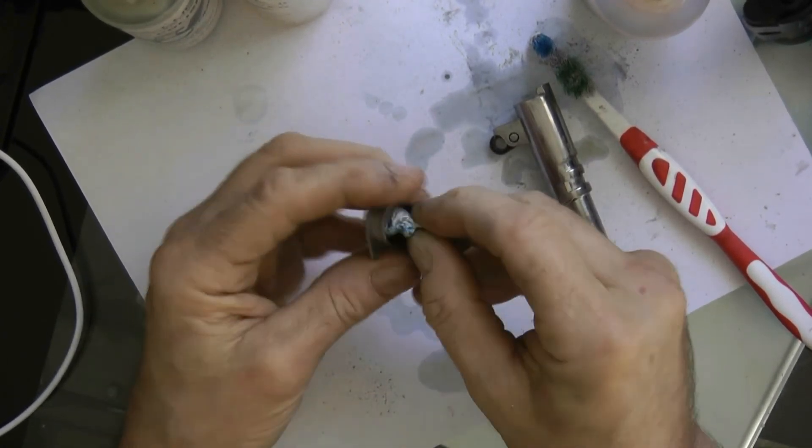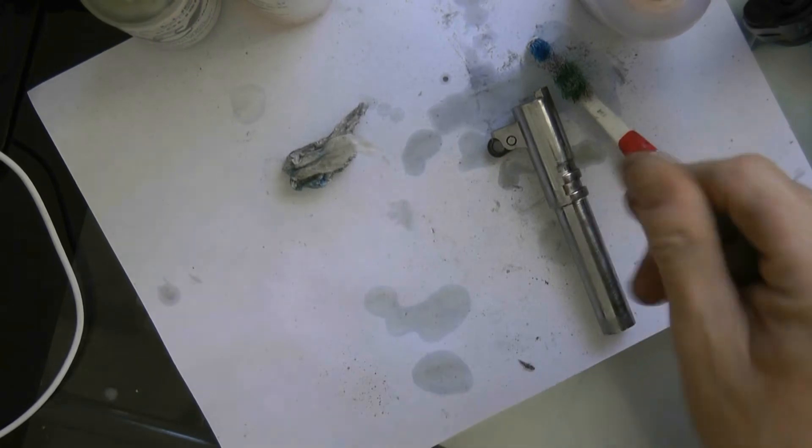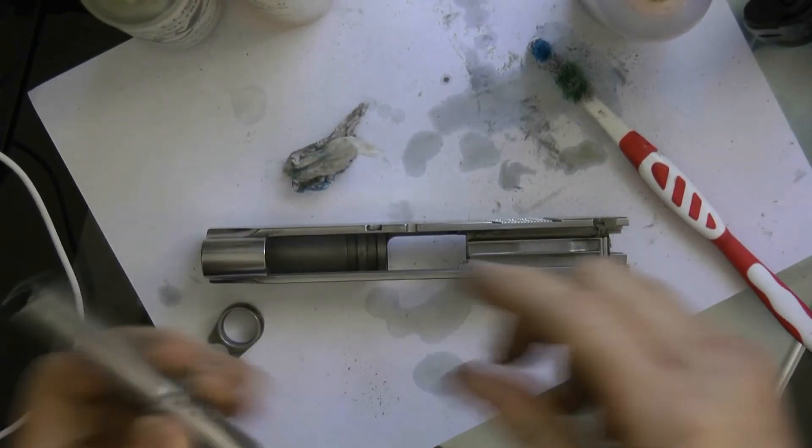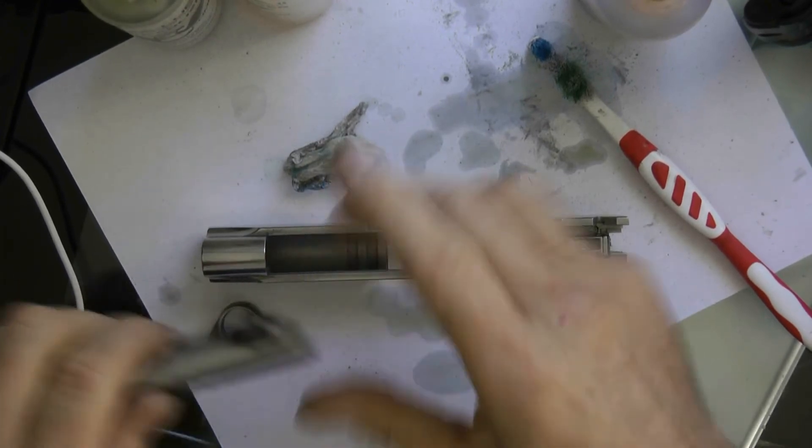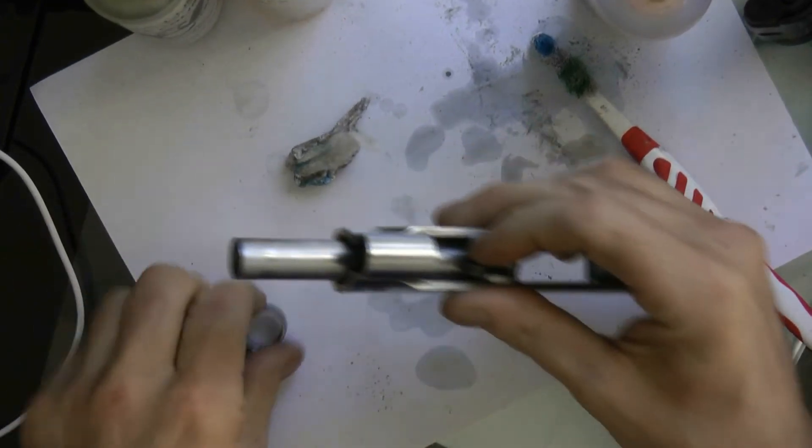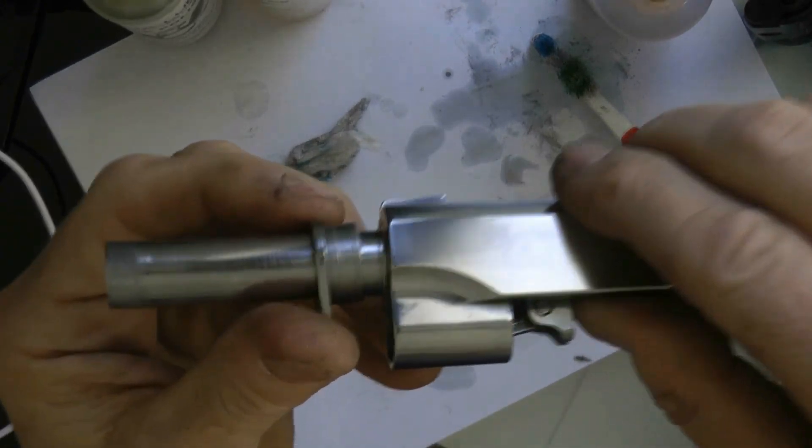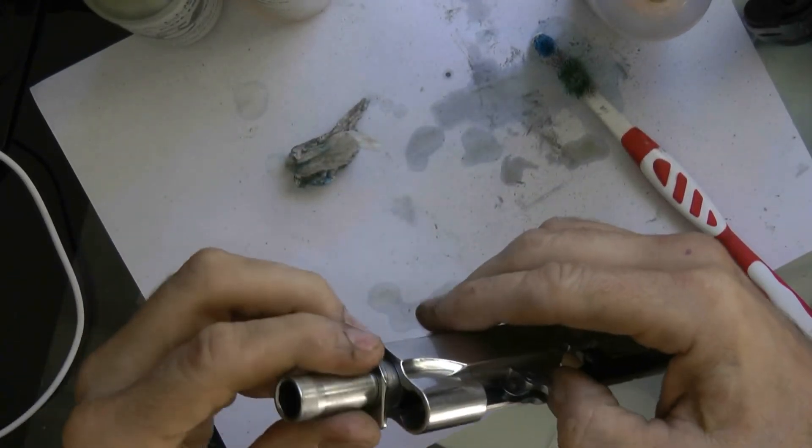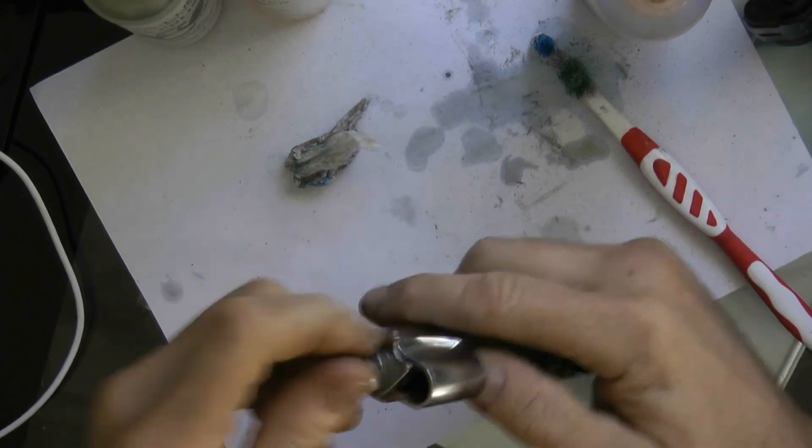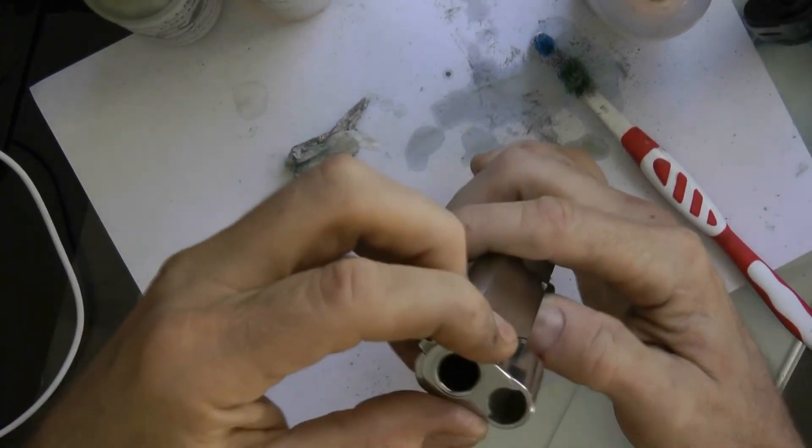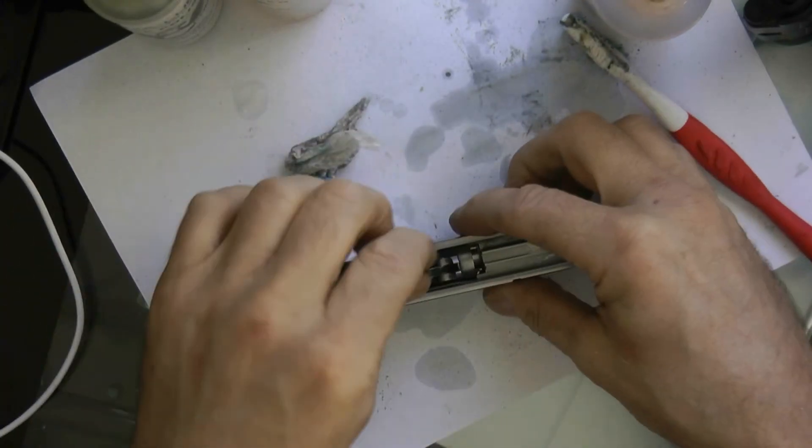That's all cleaned up, looks good. Let's get our barrel and our slide together here. You can see how small the barrel bushing on that is too. It's pretty neat. The way they designed the gun, they don't need that big barrel bushing. Just turn it a little like that.